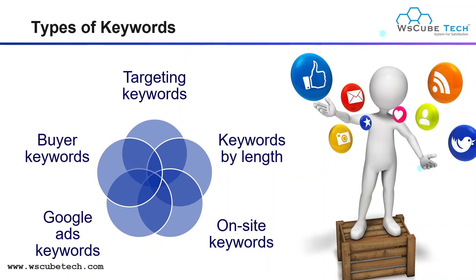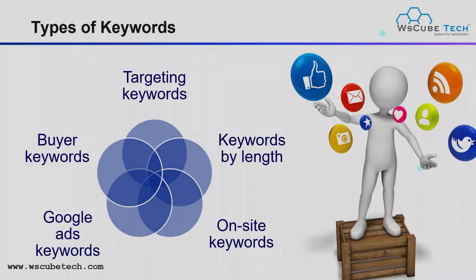Now let's talk about some types of keywords. For different types of websites, we use different keywords. We have targeting keywords, keywords by length, on-site or organic keywords, Google Ads keywords, and buyer's keywords. Let me explore some more about each of these.